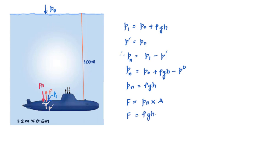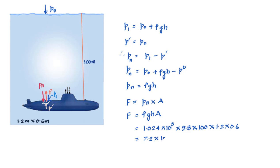Putting in the values: density of seawater is 1.024 × 10³ kg/m³, g = 9.8 m/s², height h = 100 meters, and the area of the hatch is 1.2 × 0.6 m². The force comes out to 7.2 × 10⁵ newtons.